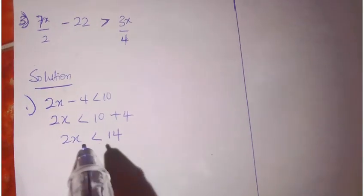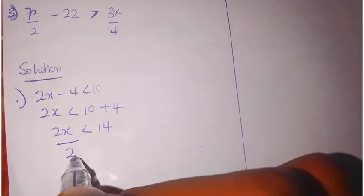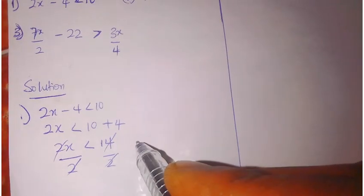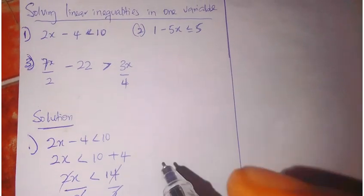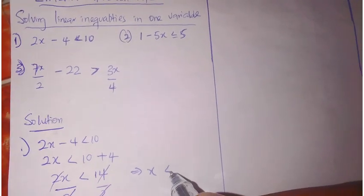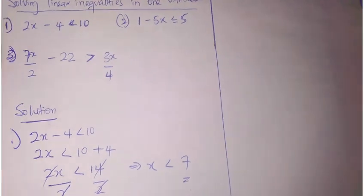Now, if 2x is less than 14, I will divide by 2 to get my x to be less than 7. So it implies that my x is less than 7. That's the answer.